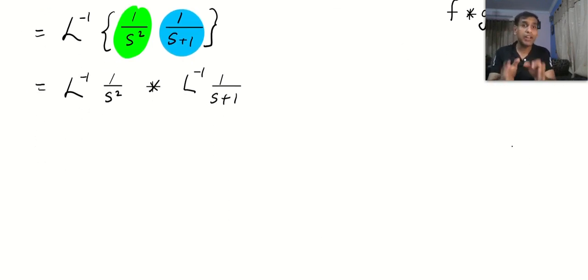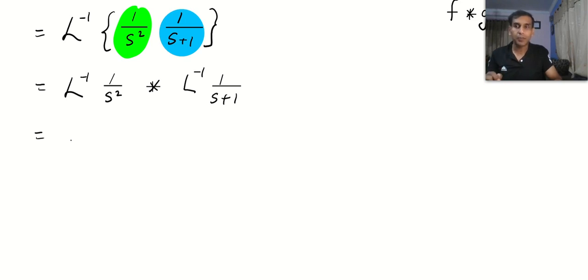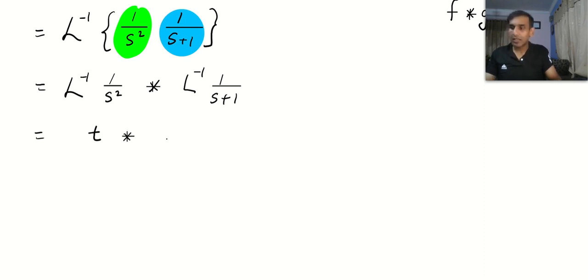We will interchange them according to the advantage we get when we integrate. The Laplace inverse of 1/s² is t. Convolution. The Laplace inverse of 1/(s+1) is e to the power minus t. You can also do it in the reverse version if you want.